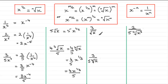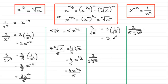For 3 divided by the square root of x, we now combine two rules. We think of this as 3 multiplied by 1 over the square root of x. Using the fractional exponent rule, the square root of x is x to the power a half. So we have 3 multiplied by 1 over x to the power a half. Then using the negative exponent rule, 1 over x to the power n is x to the power minus n, giving us 3 multiplied by x to the power minus a half.